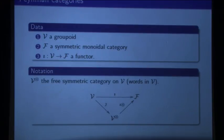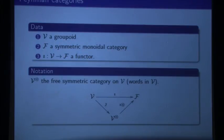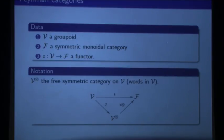V is a groupoid. A groupoid is a category in which every morphism is invertible. It's exactly this picture except you might have more objects, and everything here is an isomorphism with an inverse. So that's my data. This is slightly asymmetric — V is just a groupoid, and F is a symmetric monoidal category.